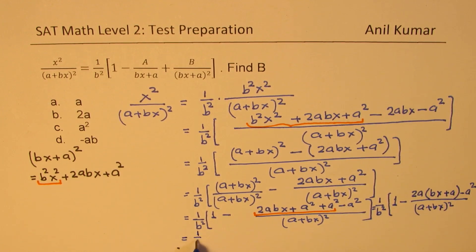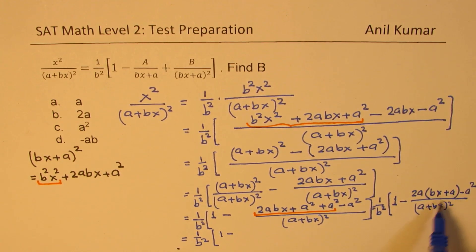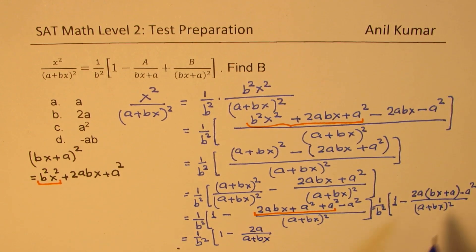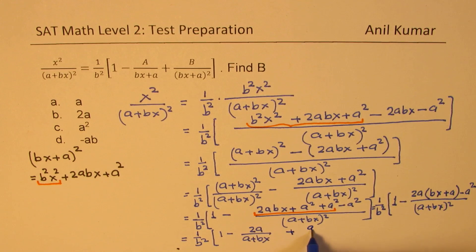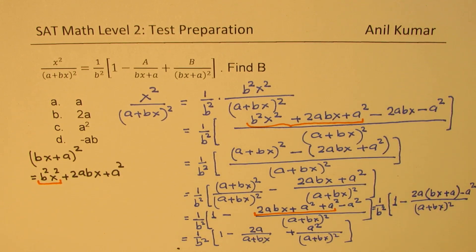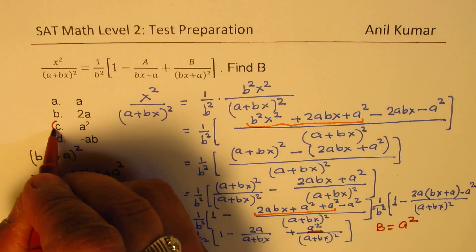Finishing off: we have 1 minus two terms. (bx plus a) divided by (a plus bx) whole squared gives 1 over (a plus bx). In the numerator we have 2a, minus sign, divided by (a plus bx) — since one (a plus bx) cancels. The minus and minus makes plus, so we have a squared divided by (a plus bx) whole squared. Comparing with the given expression, b equals a squared, so answer C is the right option.